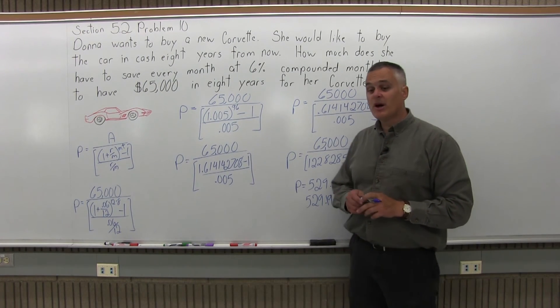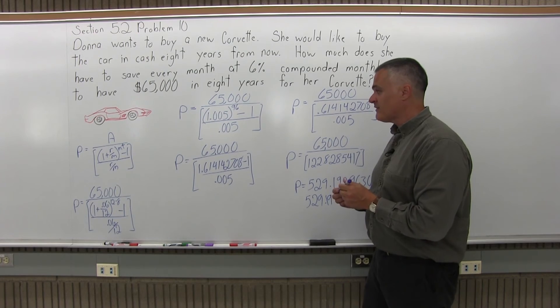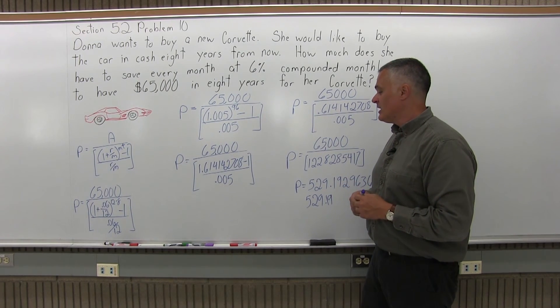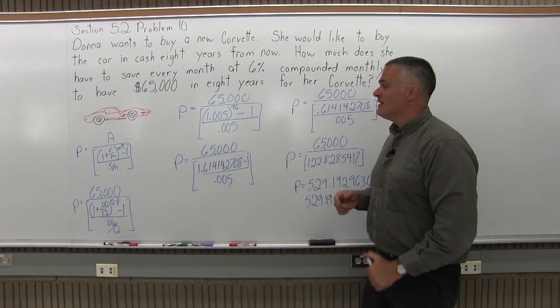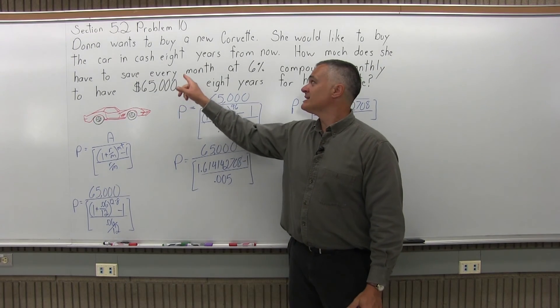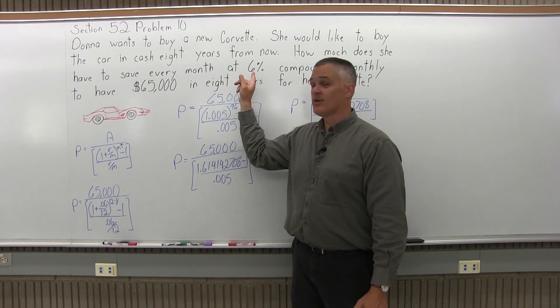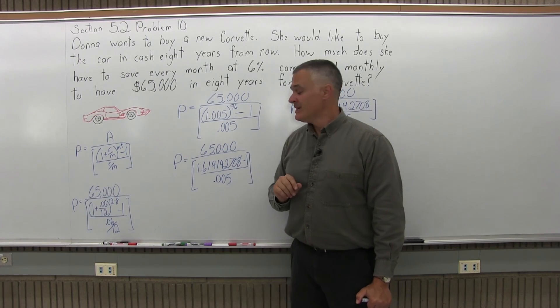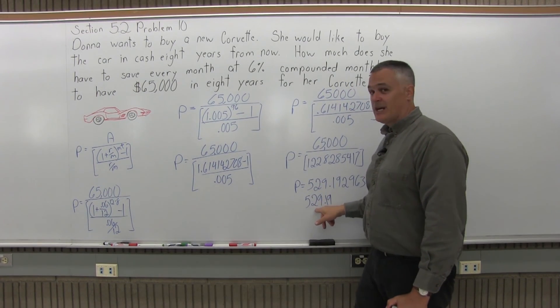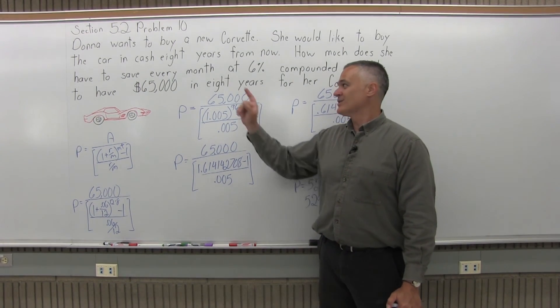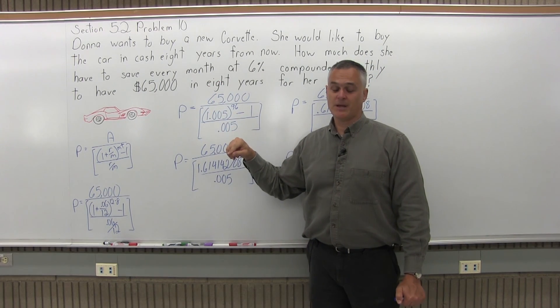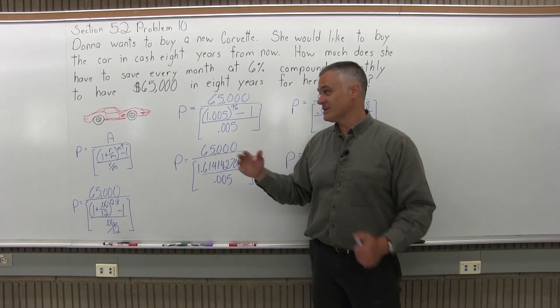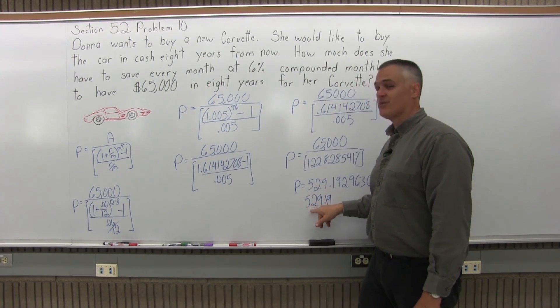If Donna saves this much every month for eight years she'll have enough to buy her Corvette in cash. Now just out of curiosity, if she buys the Corvette now and takes an eight-year loan at 6%, her monthly payments would be about $850. So this way if she saves $529 she's earning interest. If she buys the Corvette now and makes the $850 payment she's paying interest. That's the difference. If you can be patient it's a much different price per month.